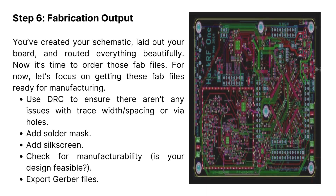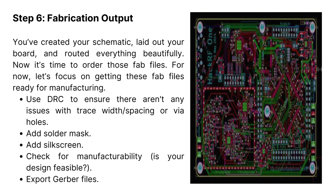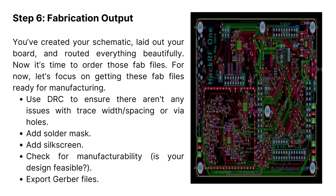Step 6: Fabrication Output. You've created your schematic, laid out your board, and routed everything. Now it's time to prepare the fabrication files. Use DRC to ensure there aren't any issues with trace width, spacing, or VIA holes. Add solder mask and silk screen. Check for manufacturability — is your design feasible? Then export your Gerber files.